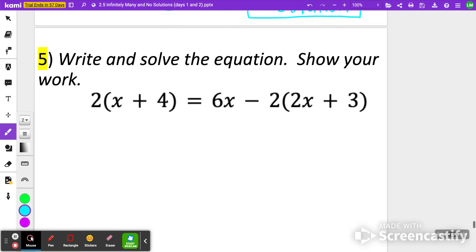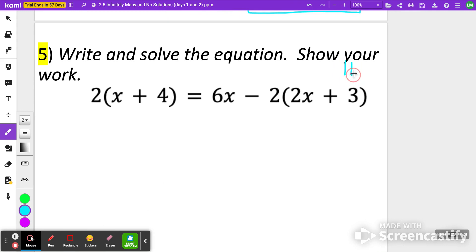We got a number five and a number six, and then we'll be done. Here we go. Pause it now. Try number five. When you're ready to check, click play. First things first, we're going to distribute on the left side. 2 times X is 2X and 2 times 4 is 8 equals 6X. Being very careful here, we're distributing a negative 2. Negative 2 times 2 is negative 4X and negative 2 times 3 is a negative 6.